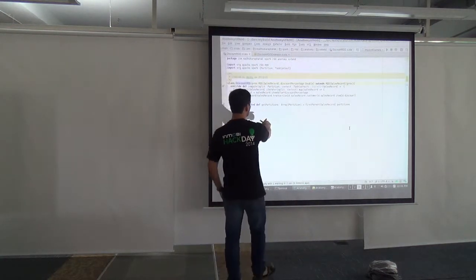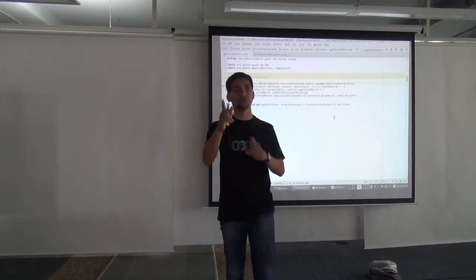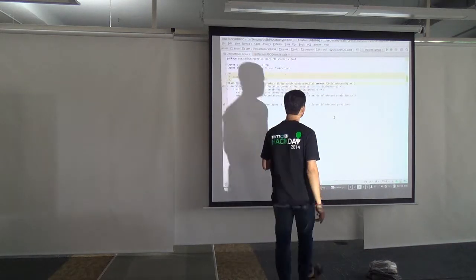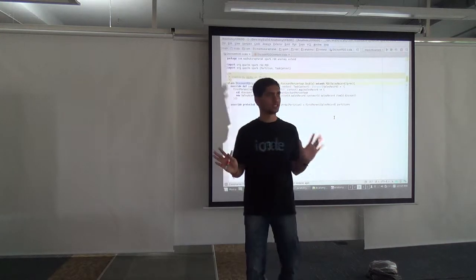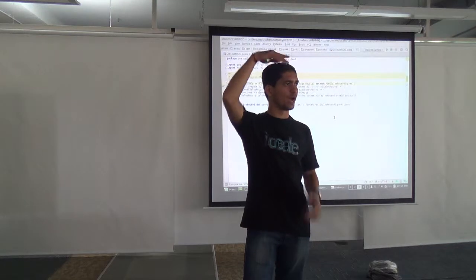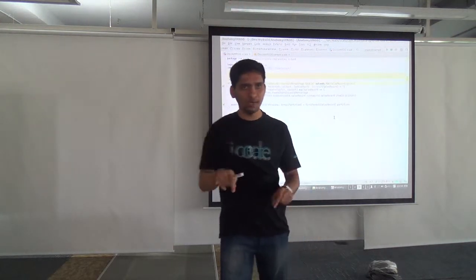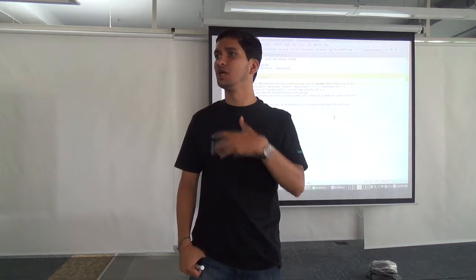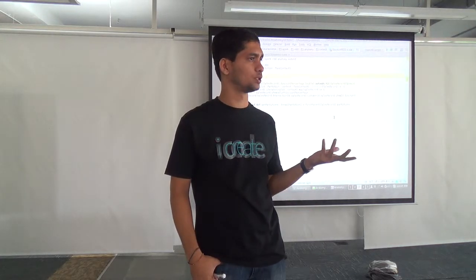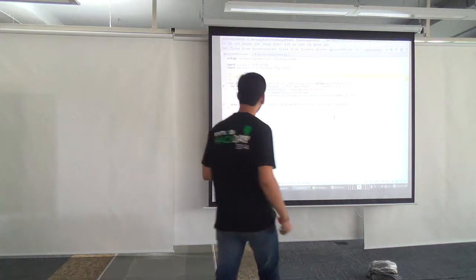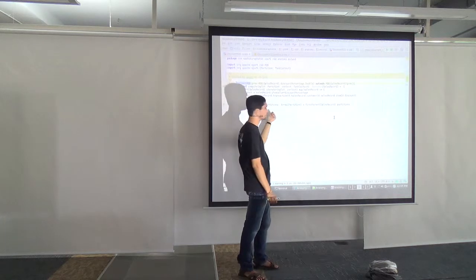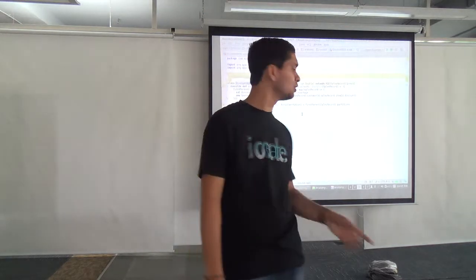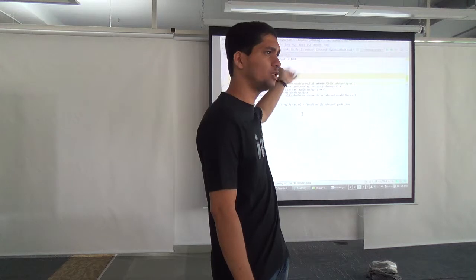Also, see getPartitions. This allows you to repartition if you want. Here, I'm keeping the same partitions as the parent — I don't want to change the number of partitions. But in this API, you can repartition if you want. This gives you control over how you want the RDD to be structured and how to do the distribution. So two things you have to override: compute — which specifies the functionality — and getPartitions — which says whether you want to change the partitions or keep the parent's.